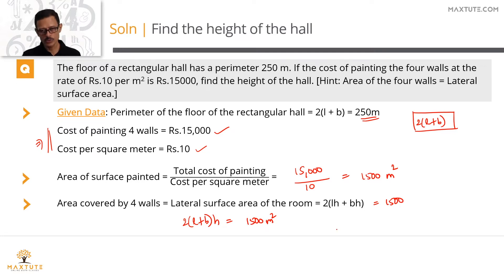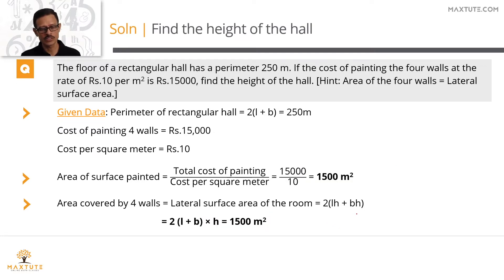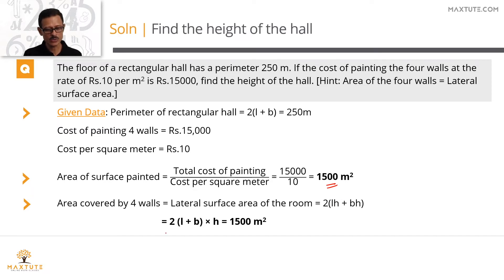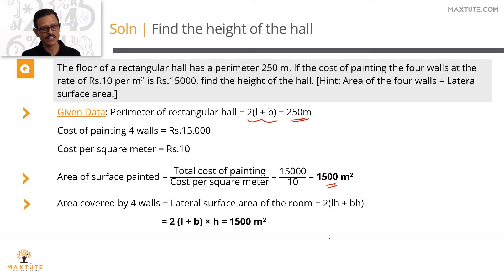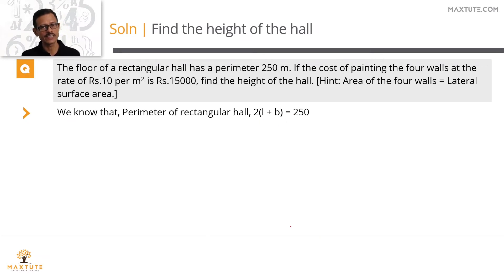To recap: area of surface painted equals total cost divided by cost per unit, which equals 1,500 square meters. The surface area painted is the lateral surface area of the cuboid, which is 2(L + B)H. Taking H common outside, we have 2(L + B) × H = 1,500 square meters. We know 2(L + B) = 250 meters from the first data point, and we will substitute that in the next step.